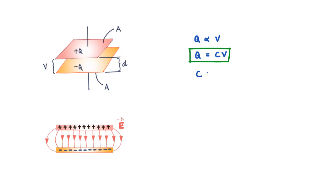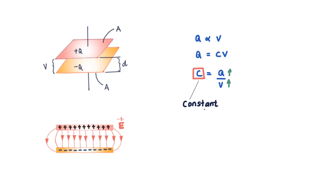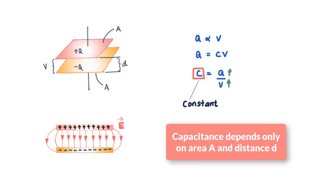You can see that C is the ratio of Q to V, but be careful — C does not increase if Q goes up or V goes down. C is a constant. When you increase Q, V also increases so that the ratio Q/V remains constant. Likewise, if you increase V, Q must increase, keeping this ratio constant at C. The value of capacitance depends only on the geometry of the plates — the area A and the distance d.